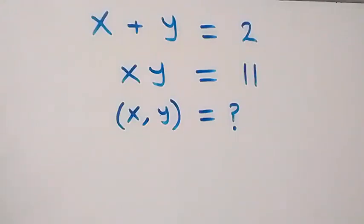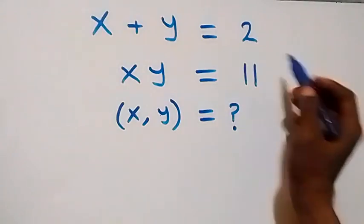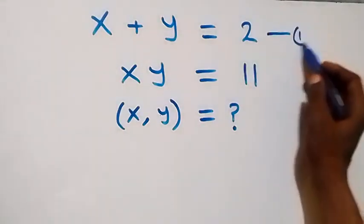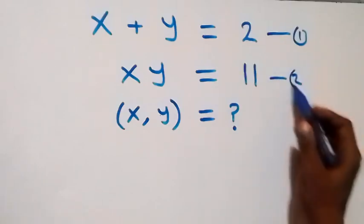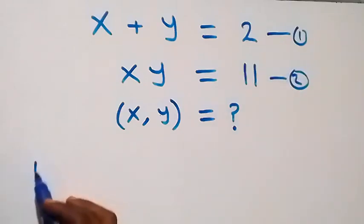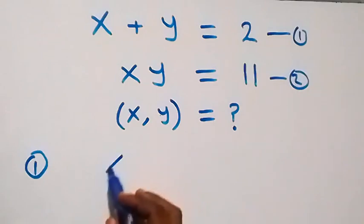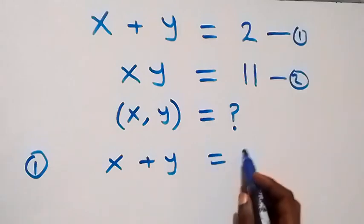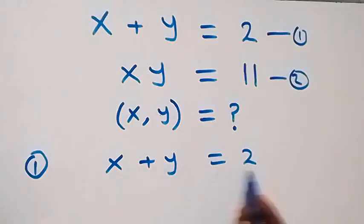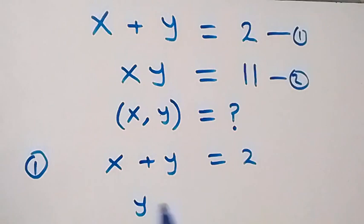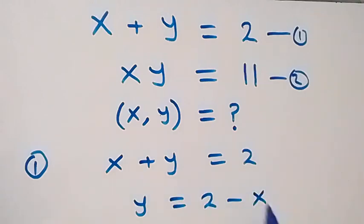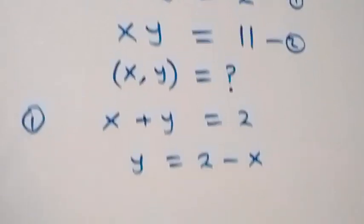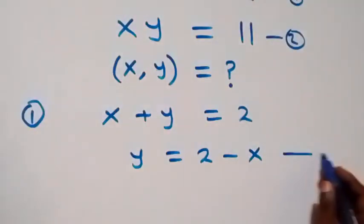Hello, you are welcome. How to solve for x and y in this system of equations. Let this be equation one and this be equation two. From equation one, which is x plus y equals to two, let's take x to this side, then we have y equals to two minus x. We call this equation three.